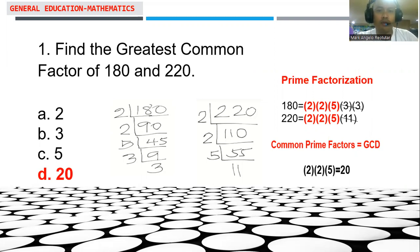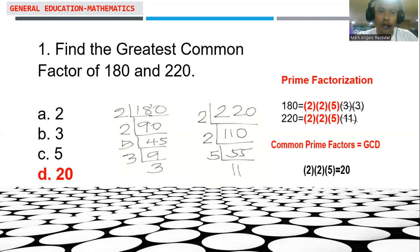When we say greatest common factor, this is a number — a common number — which is considered to be the largest factor of the two given numbers. So considering the factors of 180 and 220, we look into their common greatest factor, and that will serve as the answer of the problem.